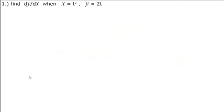Parametric equations problem number one: find dy/dx when x equals t squared and y equals 2t.